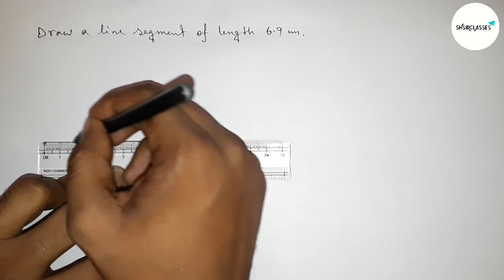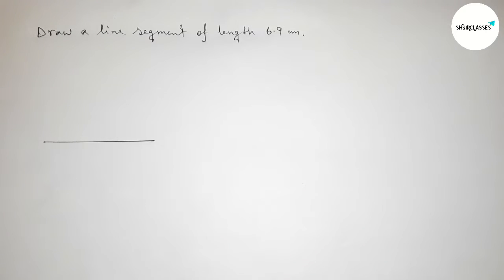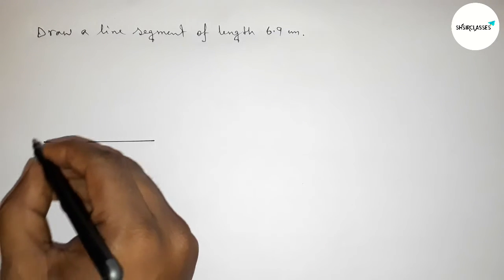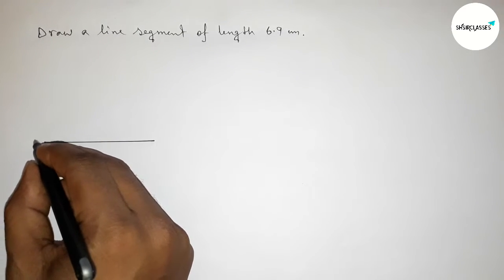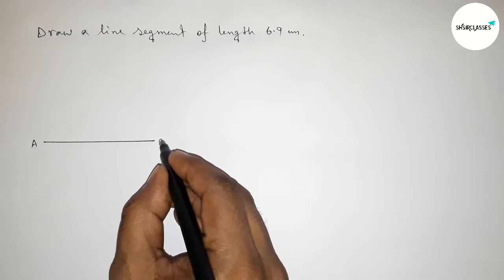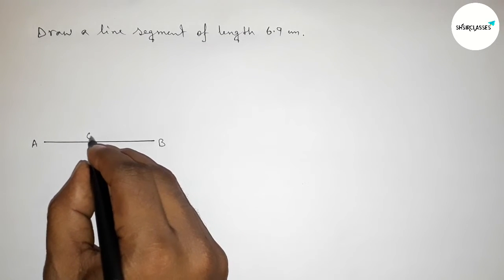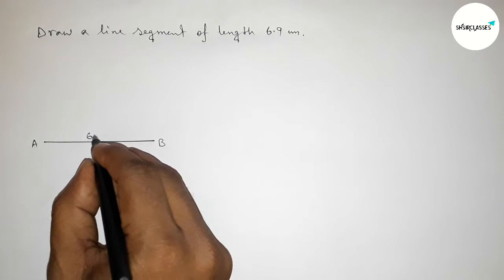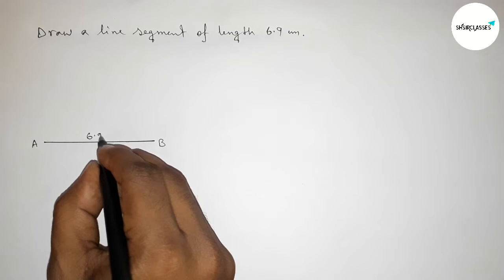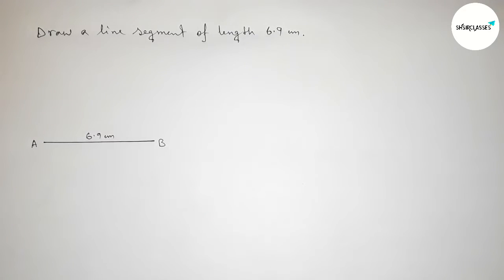Now joining this line. Taking point A here and point B here, so AB is a line segment of length 6.9 centimeters.